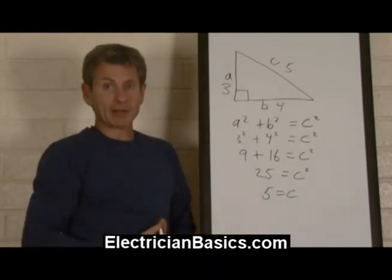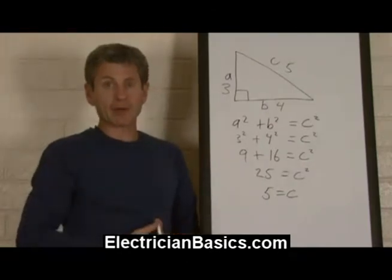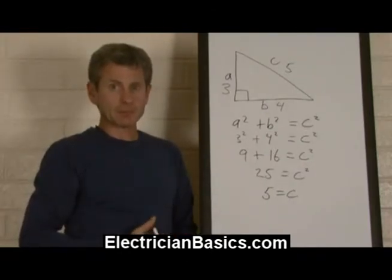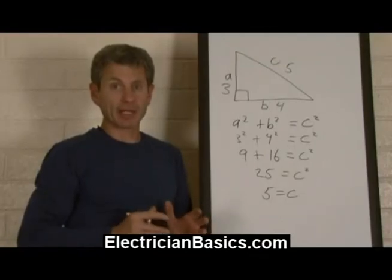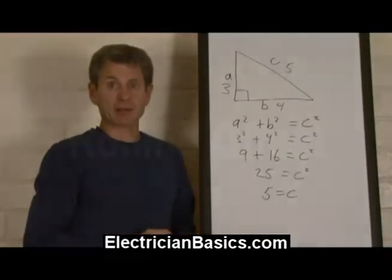So you'll find that with right triangles, anyone with the ratio 3-4-5 is a right triangle. So we just took a simple common example here to re-explain the Pythagorean theorem.